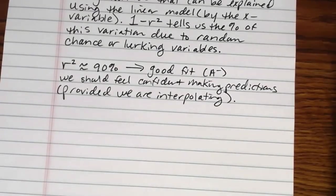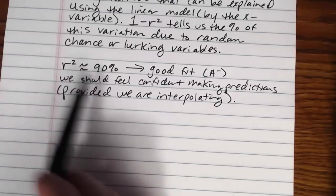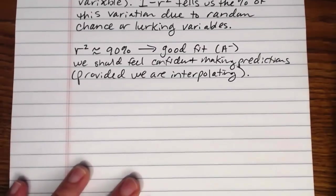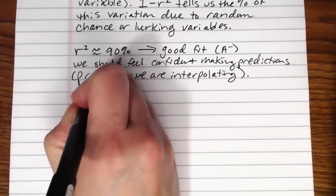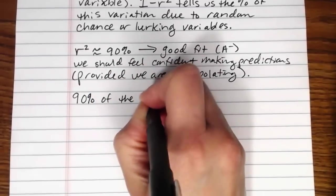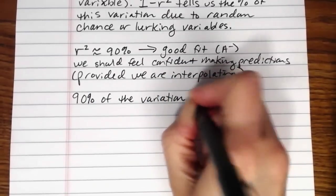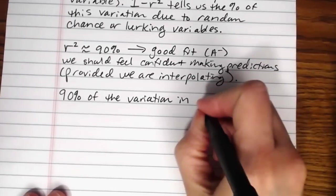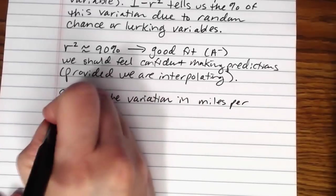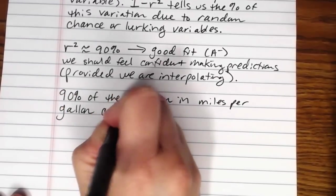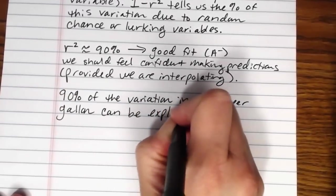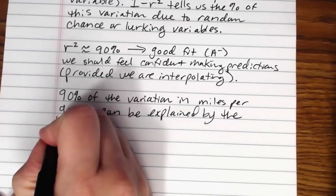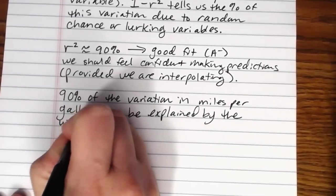So if we are interpolating, we would expect our predictions to be pretty accurate because this model does a really good job fitting the data. Our line actually fits the data very well. The other thing that this tells us is it tells us that 90% of the variation in the y variable, which in this case was miles per gallon, can be explained by the x variable, which in this case, the x variable was the weight of the car.